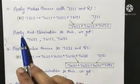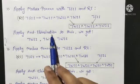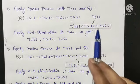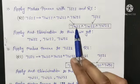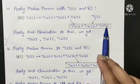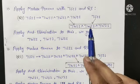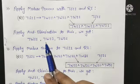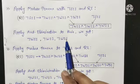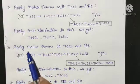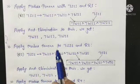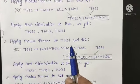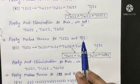Applying AND-elimination to this result, we get three sentences. Again, we are applying Modus Ponens to the negation of S21 and rule R2. Negation of S21 means there is no stench in room 2,1.